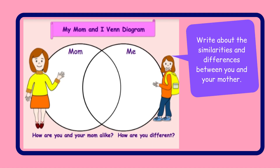Now, look at the Venn diagram. Write words about how you and your mother are alike in the middle of the diagram, and also write about the differences between you and your mother. After you have finished, please write a paragraph describing the similarities and differences between you and your mother.